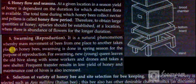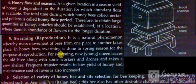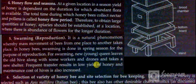Swarming means reproduction. It is a natural phenomenon whereby mass movement of bees from one place to another takes place. In honeybees, swarming is done in the spring season for the purpose of reproduction. For swarming, a new young queen leaves the old hive along with some workers and drones and takes a new shelter.